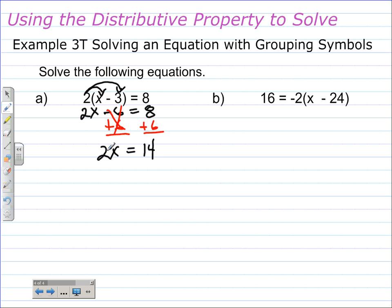Next, we have 2 times X equals 14. The opposite of times is division. So we divide by 2. 2X divided by 2 gives X. On the right-hand side, we simplify. 14 divided by 2 is 7.